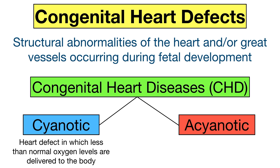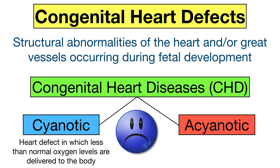In other words, the heart is pumping mixed blood containing both oxygen-poor and oxygen-rich blood to the rest of the body. This can lead to cyanosis, which is a bluish discoloration of the skin. Cyanotic heart defects contain right-to-left shunts, meaning deoxygenated blood from the right heart mixes with oxygenated blood in the left heart, causing oxygen-poor blood to be delivered to the rest of the body.